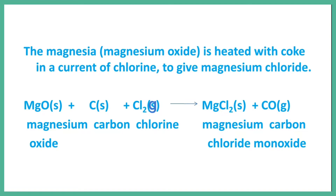MgO is magnesium oxide, carbon and chlorine, which gives MgCl2 and can be used for mineral sodium. The equation of nitrogen is equal to the level of nitrogen. Extraction chemical equations represent the physical state.